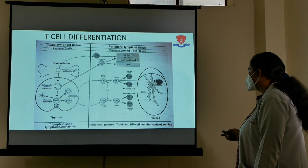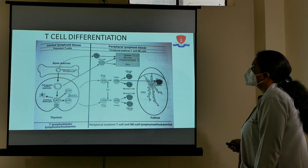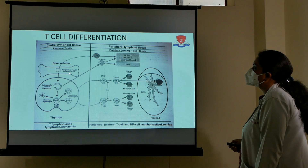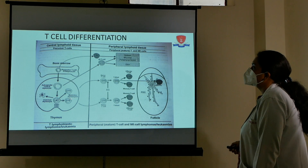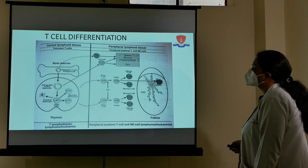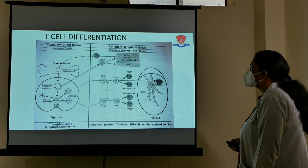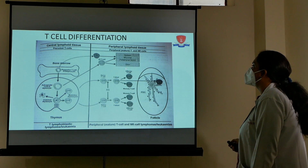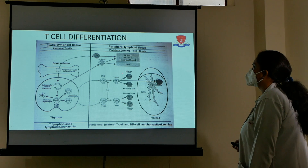This is the flowchart for T cell differentiation. T cells develop in the thymus — progenitor T cells and thymocytes develop in bone marrow and then migrate to the thymus where they mature. If lymphomas develop from these premature cells, they are called T lymphoblastic lymphomas. Mature T cells travel through the blood to peripheral lymphoid organs like the spleen, mucosa, blood, and skin, where they can develop into different types of lymphomas.